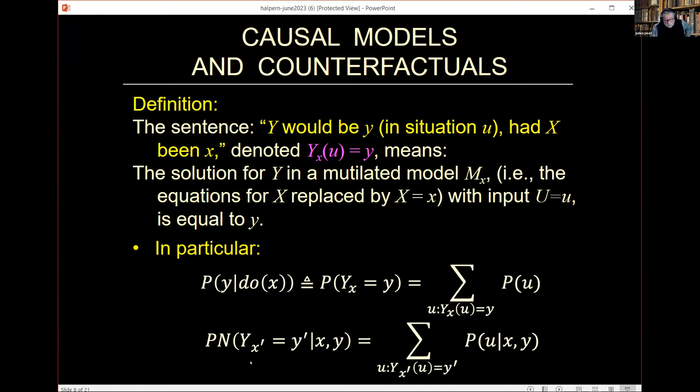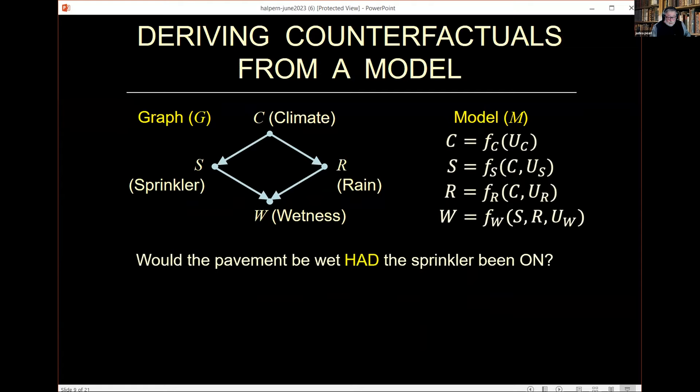I want words such that in reality, X equals small x, Y equals small y, but after I manipulate things, the solution for Y is y prime different, and the solution under the manipulation of X being x prime, not x. So that's a counterfactual. It's extremely easy and simple operation. We have an algorithm for that, computing it in three steps.